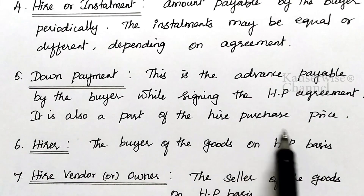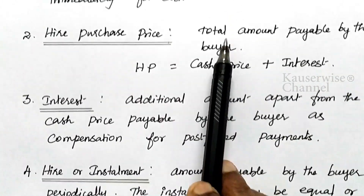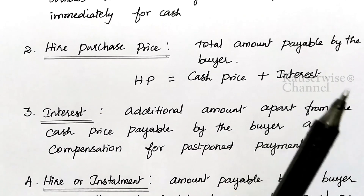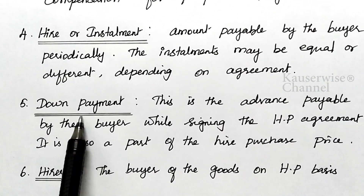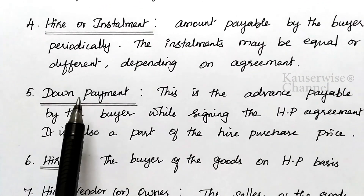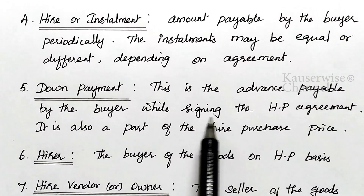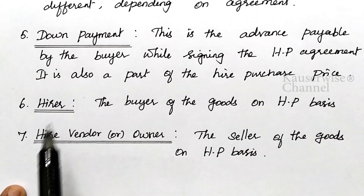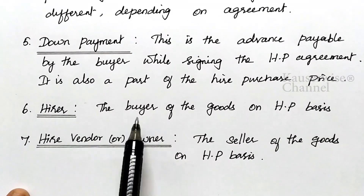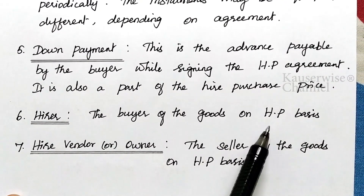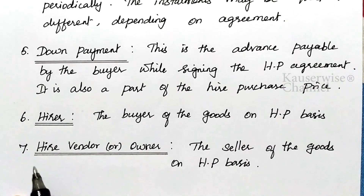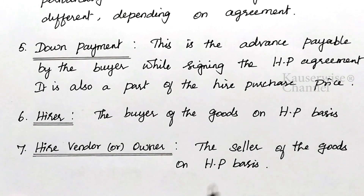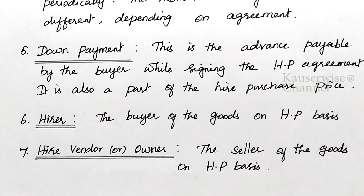The hire purchase price is the total amount payable by the buyer. In that, the first payment is called down payment because this amount is payable at the time of signing the hire purchase agreement. Hirer means buyer of the goods on hire purchase basis, and hire vendor means the owner — that is, the seller of the goods on hire purchase system.